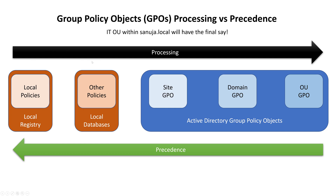When your computer first boots up, it looks at your local registry keys — which are local policies — and applies those first. Then it applies whatever is in the local database, overriding local policies if necessary. Then it looks for site GPOs, overriding what happened previously, then domain GPOs, overriding the site GPO, and finally the organizational unit GPO is applied. So in terms of processing, it goes from local to local databases to site to domain to organizational unit. But in terms of precedence, whatever is dictated at the organizational unit level takes precedence over everything else.